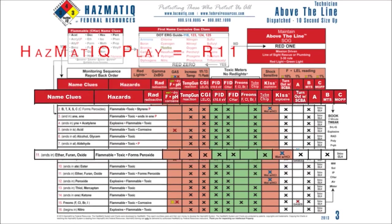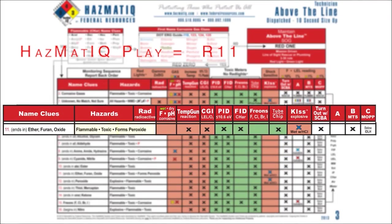So ethyl ether — above the line, chart three, red 11. What are the hazards? Immediately you know: flammability, toxicity, and forms peroxides. If it forms peroxide, you just go down to red 12. This has the potential to be explosive. If it's flammable, we're wearing turnout. If it's toxic, we're wearing respiratory protection, SCBA. And if it forms a peroxide, you'll see the last column says KI paper — KISS paper, bomb paper — an oxidizer paper that goes from white to blue when it's a peroxide.